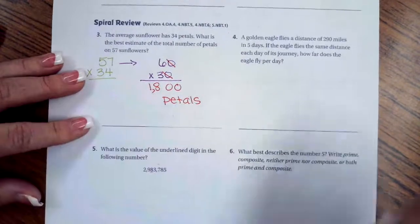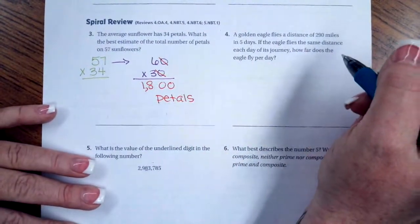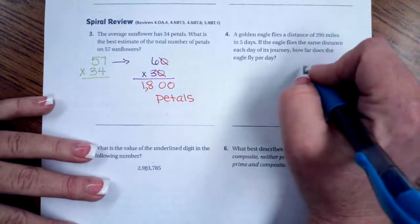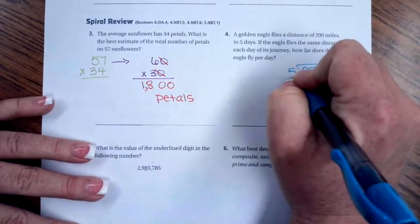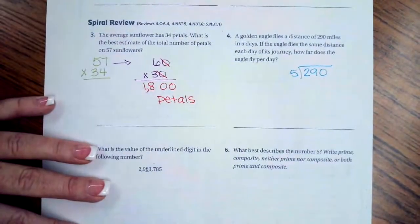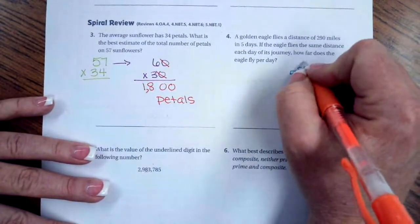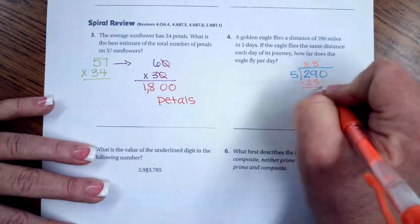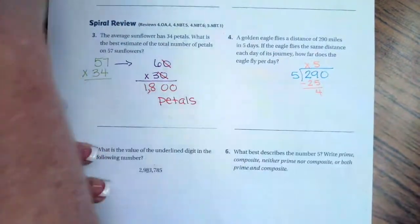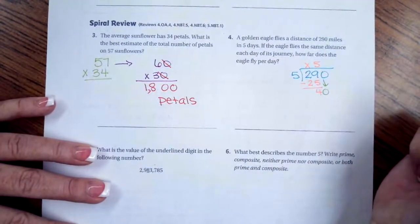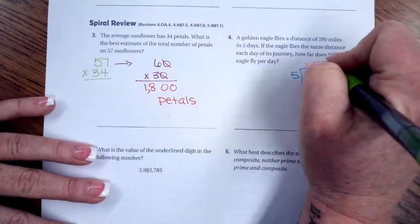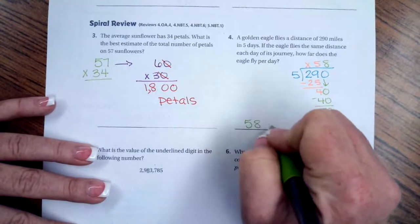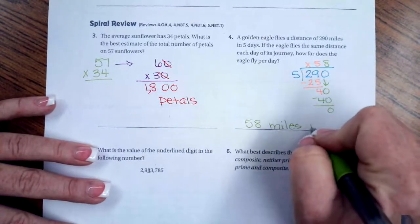Number four, a golden eagle flies a distance of 290 miles in five days. If the eagle flies the same distance each day of the journey, how far does the eagle fly per day? Well, he flies 290 miles and he does that in five days. So let's do some math. Five is not going to go into two. So I'm going to put my placeholder. Five goes into 29 five times, which is 25. I'm going to subtract. I get four left over. Now I'm going to bring down my zero. Now five goes into 40 eight times, which is 40. I subtract, I get nothing. So now 58 miles per day.